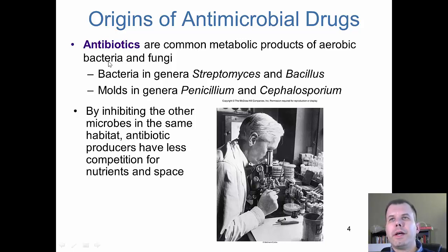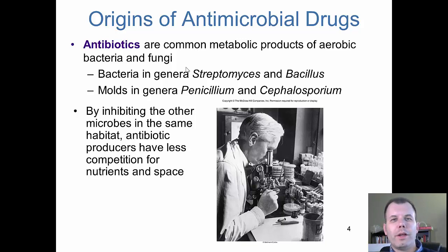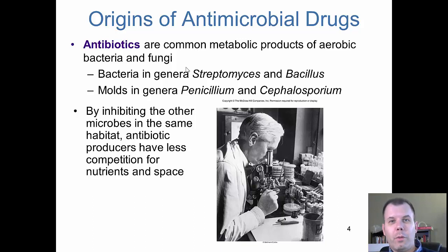So where did antibiotics come from? Antibiotics were common metabolic products of aerobic bacteria and fungi. This is because it's all about space - if you were fighting with another organism for the same spot, essentially microbes will release chemicals to kill the other organism that wants their space. These are antimicrobials. We knew there were things in these different microbes that could limit the growth of certain things, but we really didn't know how to isolate them or how they worked. The first scientist to really have any information about this was Alexander Fleming.